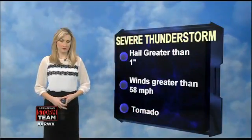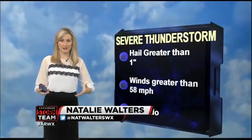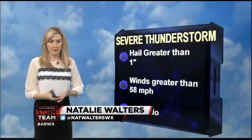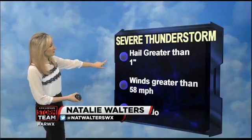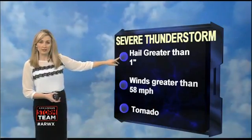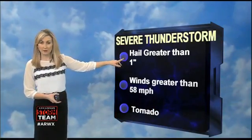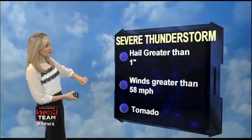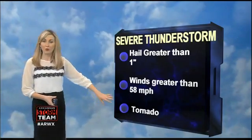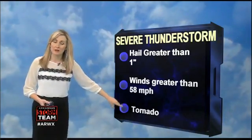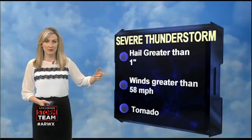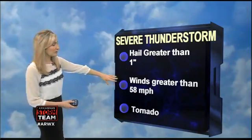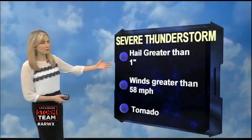The National Weather Service defines a severe thunderstorm as one that has hail greater than one inch in diameter, which is quarter-sized hail, winds greater than 58 miles per hour, or a tornado. I'm going to be talking about the hail and the damaging winds and how both of those form.